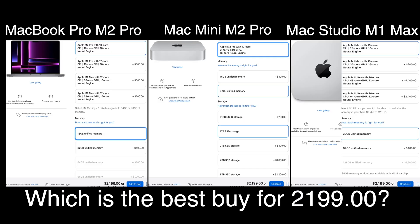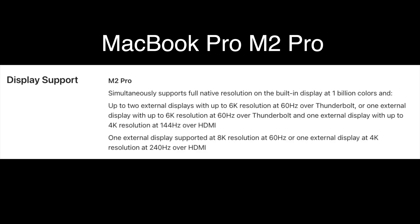Before we talk about ports, let's talk about monitor connectivity. The MacBook Pro M2 Pro supports up to two external displays at up to 6K resolution at 60Hz over Thunderbolt, or one external display at 6K 60Hz over Thunderbolt plus one at 4K 144Hz over HDMI — I believe that's the first time you get that high a refresh rate at 4K. And then there's one external display at 8K 60Hz, or — and this is the clincher — one external display at 4K 240Hz over HDMI. That's a first for any Mac, except maybe the older Mac Pro with a dedicated graphics card.